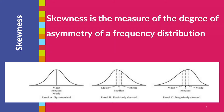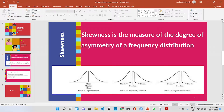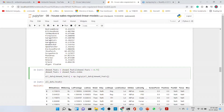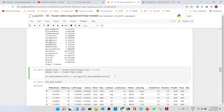If the distribution is symmetrical, the mean, median, and mode are the same. If it is positively skewed, the mean is greater than the median, and the median is greater than the mode. If it is negatively skewed, the mean is less than the median, and the median is less than the mode. So we take those features with high skewness and apply log1p to normalize them.